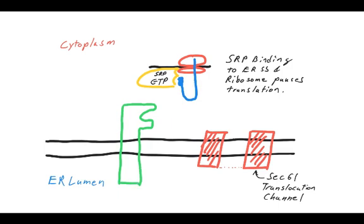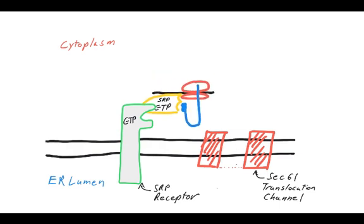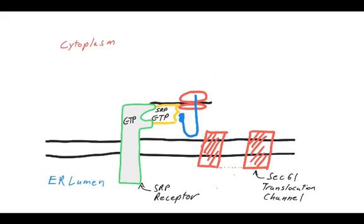Now one of the interesting things about SRP receptor is that, like SRP, it is also a GTP binding protein. So what you have are these two GTPases. They're both enzymes capable of hydrolyzing GTP, and that hydrolysis plays a critical role later in the translocation process. So what happens is you have SRP receptor loaded with GTP, SRP loaded with GTP, the ribosome and the signal sequence, and that generates a high affinity interaction that docks the SRP ribosome signal sequence complex to the surface of the ER and places it in proximity to the SEC61 translocation channel.